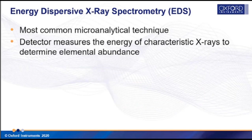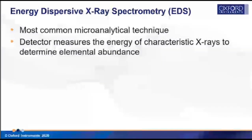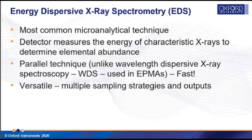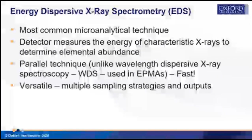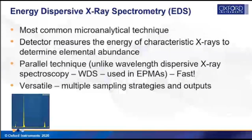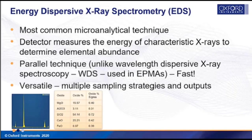In EDS the detector measures the energy of characteristic X-rays emitted from our sample. By measuring these energies the system can determine the abundance of individual elements at that point. Importantly, it's a parallel technique — unlike wavelength dispersive X-ray spectroscopy or WDS as used in microprobes, EDS is very fast as it collects the whole spectrum in one go. It's also versatile, with multiple sampling strategies and a whole host of different outputs.